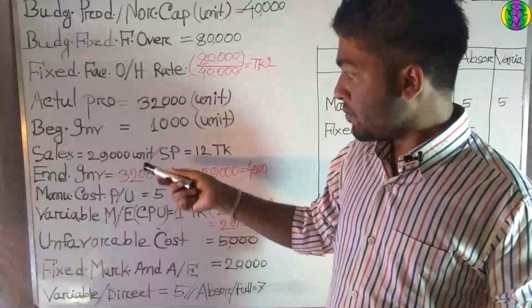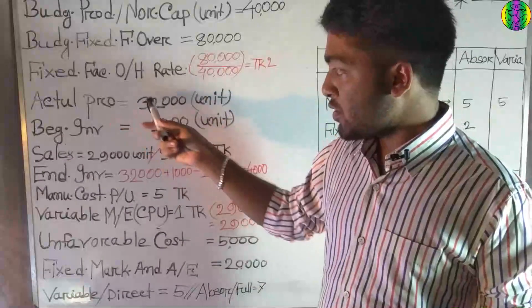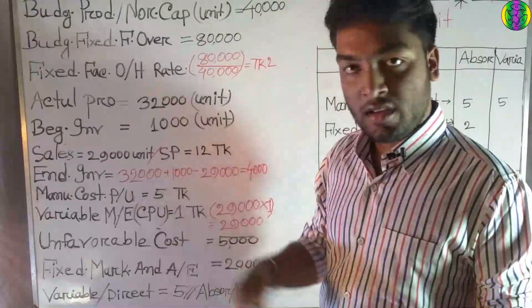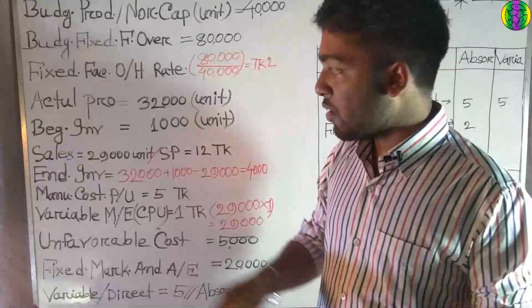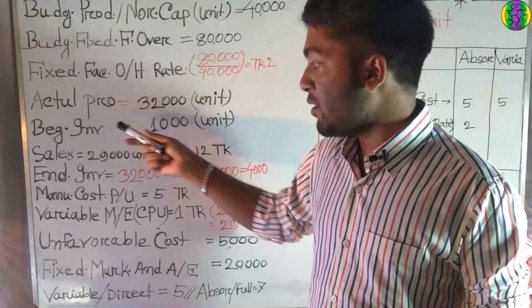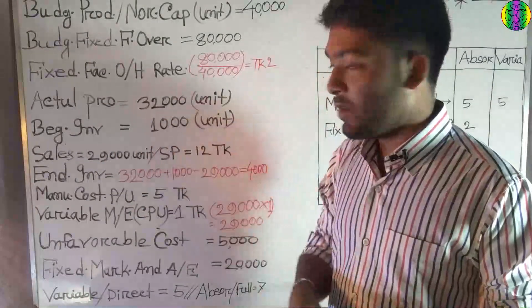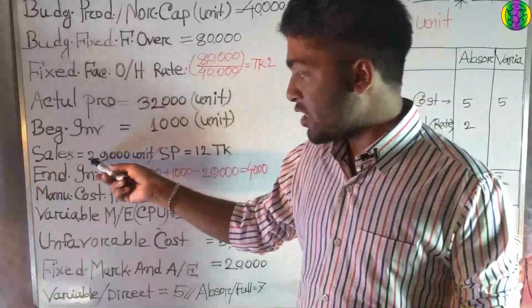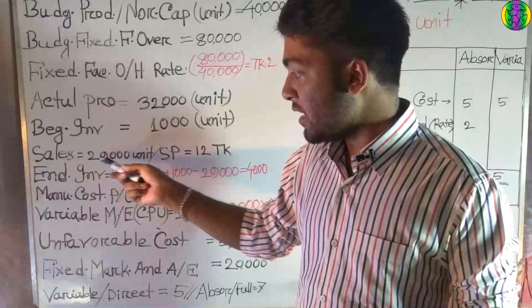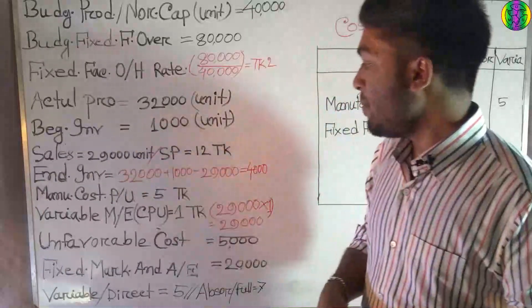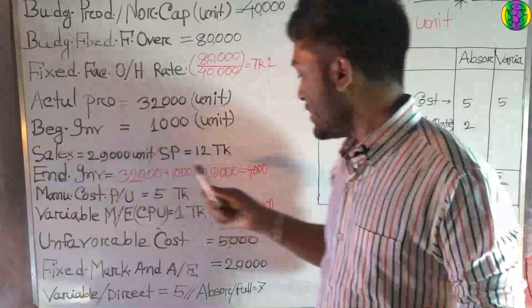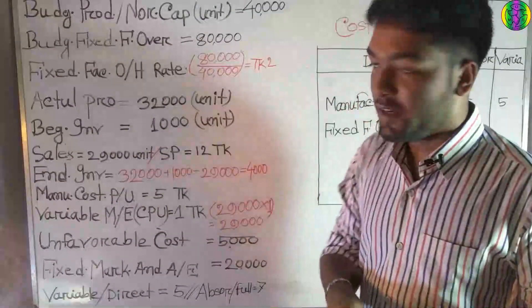The production sale is 32,000 units. The beginning and opening inventory is 1,000 units. The actual sales are 39,000 units. The ending inventory is 4,000 units. These figures will be used in our comparative income statement preparation.